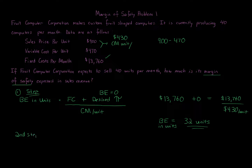Step two: take the number of units or dollars expected to be sold. If the question gives you expected sales in dollars, you'd calculate break-even in dollars too. You can always convert break-even units to dollars by multiplying units by the sales price.